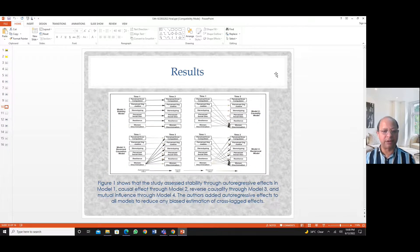The results of this model: first of all, the model we tried to, as indicated earlier, we wanted to test the stability of this construct through autoregressive effects. In this model, we are looking at the causal first model; second, reverse causal model two; and in model three, we are looking at reciprocal relationship. And model four, the authors have added autoregressive effects to reduce any biased estimation of the cross-lagged effects because it's a longitudinal study. So this is the model that is being tested. Four models are being tested here.